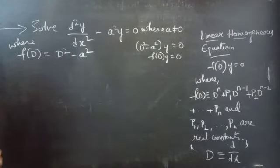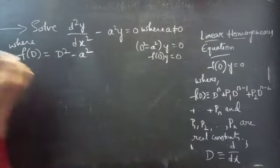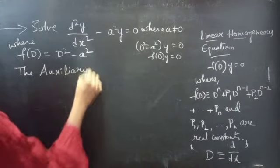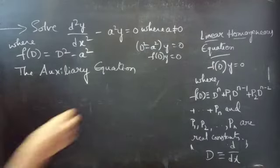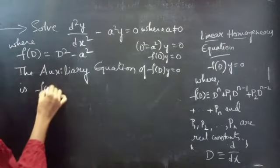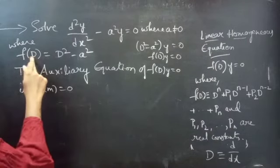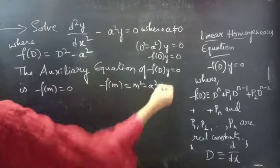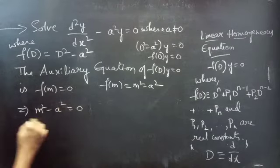Now we need to find the solution to the given equation. The auxiliary equation of f(D)·y = 0 is f(m) = 0. To get f(m), we simply replace D by m, which gives us f(m) equals m² minus a². So m² minus a² equals zero.